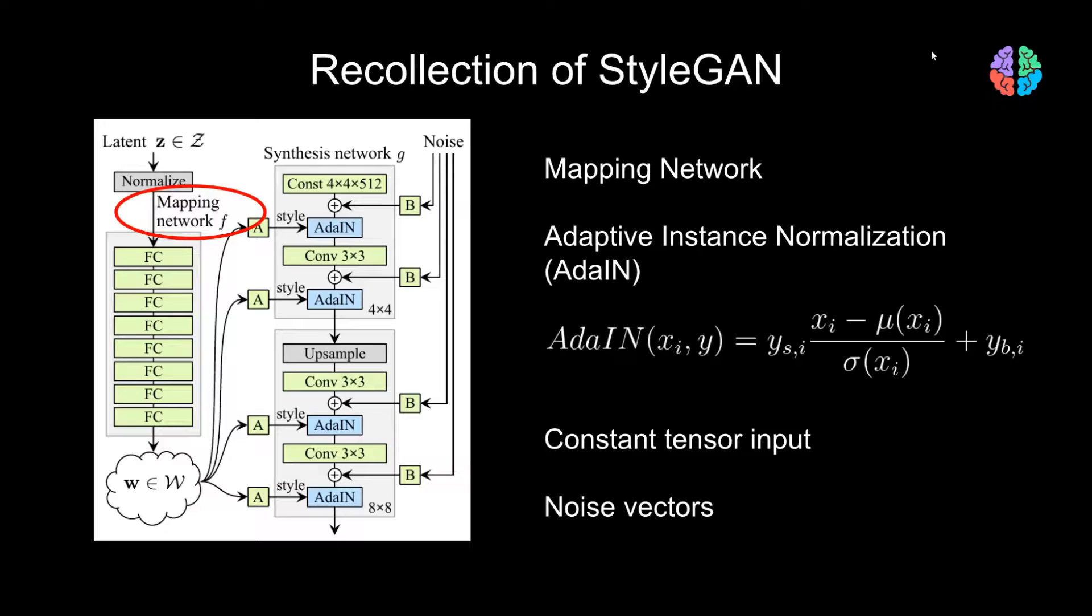The W vectors are then fed into the affine transformation module A. The output styles of the module A are called Y, and these Y vectors along with the features XI are passed into the adaptive instance normalization layers of the synthesis network G.